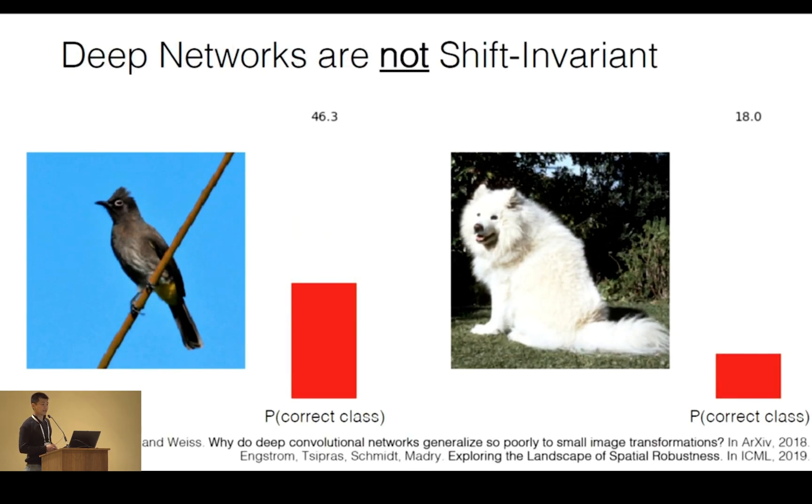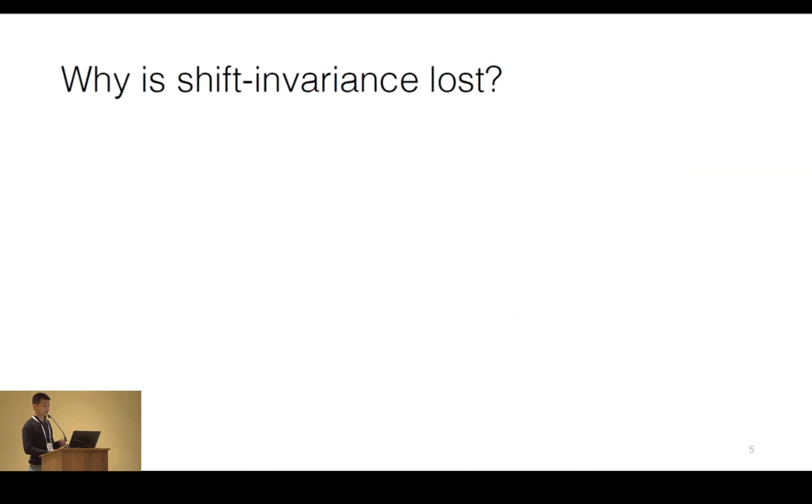Now, this sensitivity has been analyzed in some great recent work, including in this conference. Inspired by this work, we're aiming to produce a fix. To do so, we must first ask why. Why is this happening? How can shift invariance be lost?